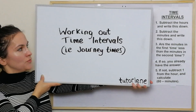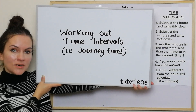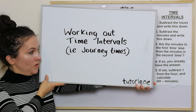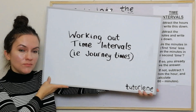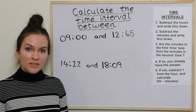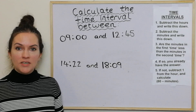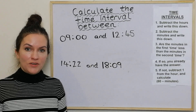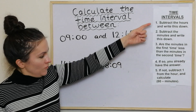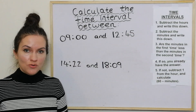Welcome. In this section we're going to be looking at working out time intervals between two given times. You might wonder why you would ever need to know this. Well, one example is journey times. You could also want to know how long a film is going to last, or if you put something in the oven at one time and take it out at another, how long it's been in the oven. I'm going to look at some examples using a five-step guide.